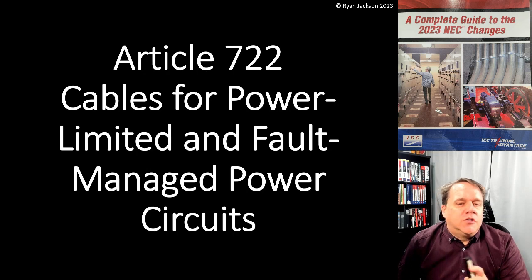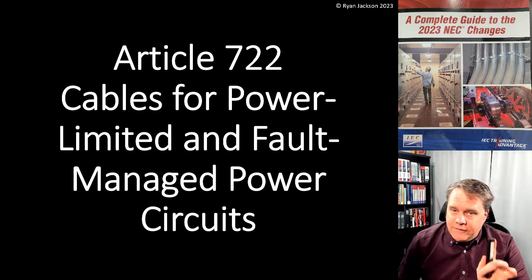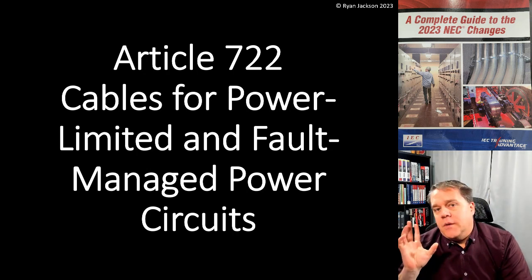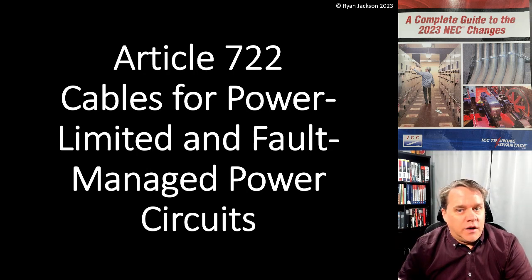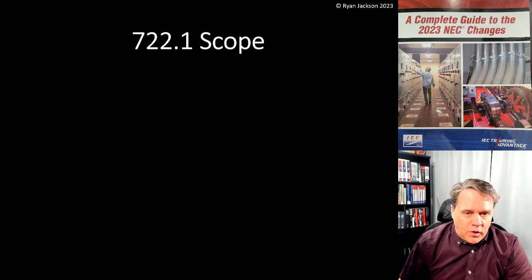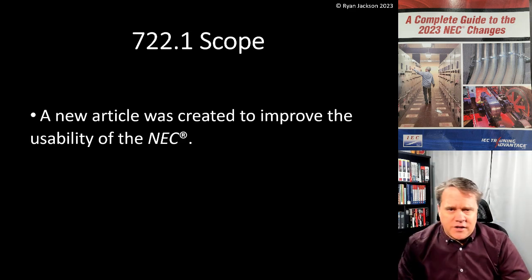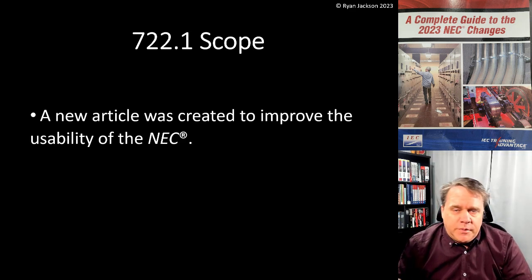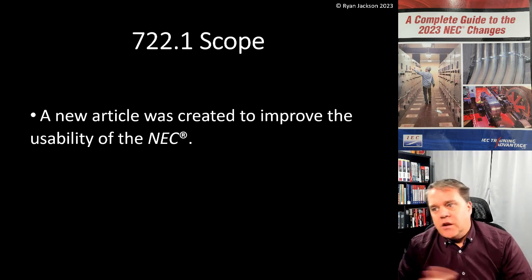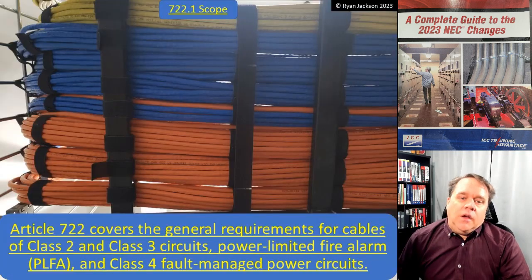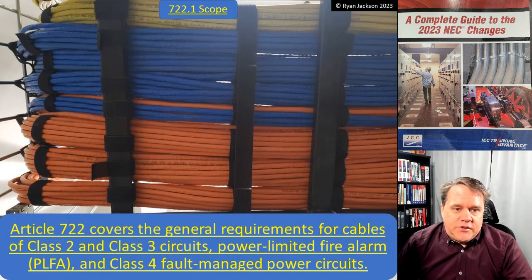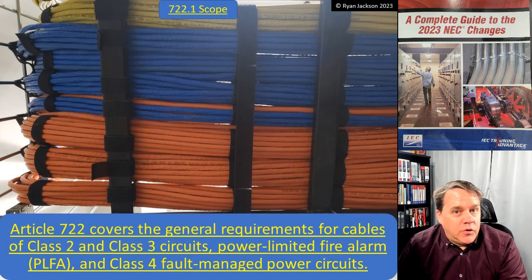Article 722 — cables for power limited and fault managed power circuits. We haven't talked about a fault managed power circuit yet; that's going to be a Class 4 circuit covered in the new Article 726. For right now, Article 722 is a new article that improves the usability of the NEC. It's not going to change the way you wire a building; it just makes the code book better.